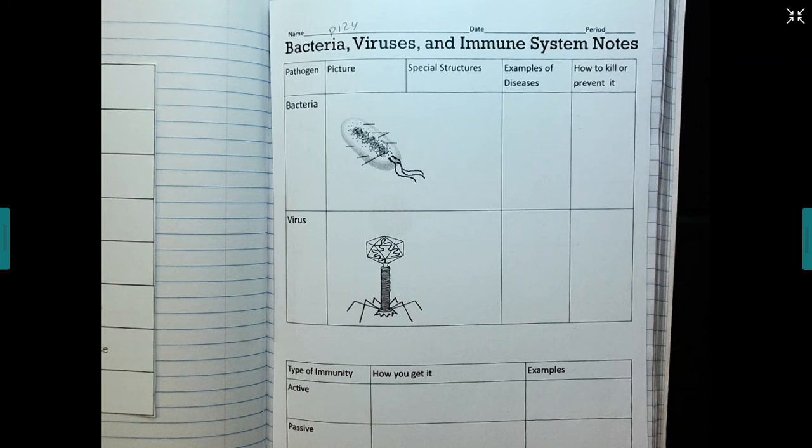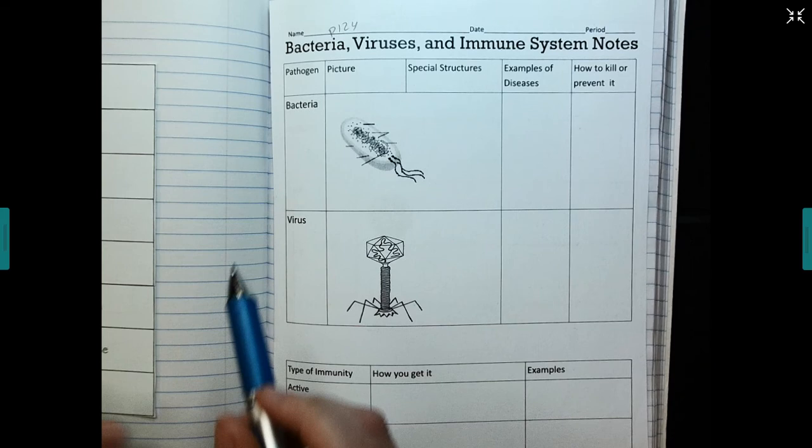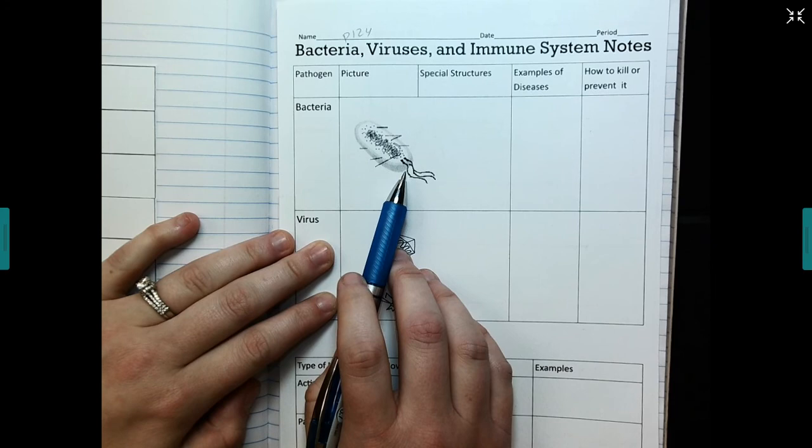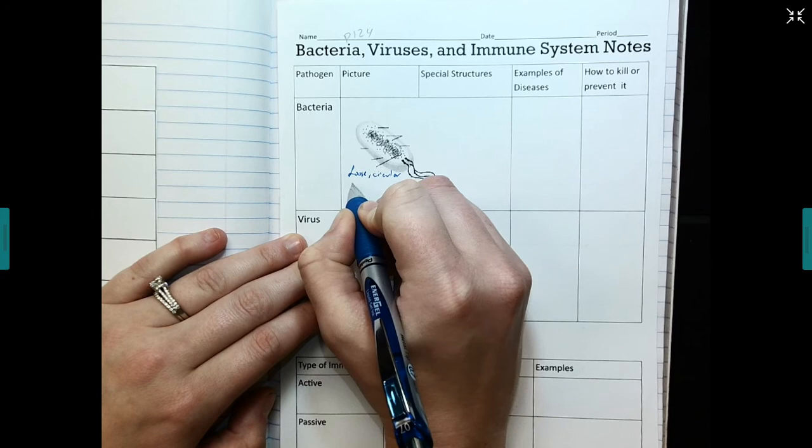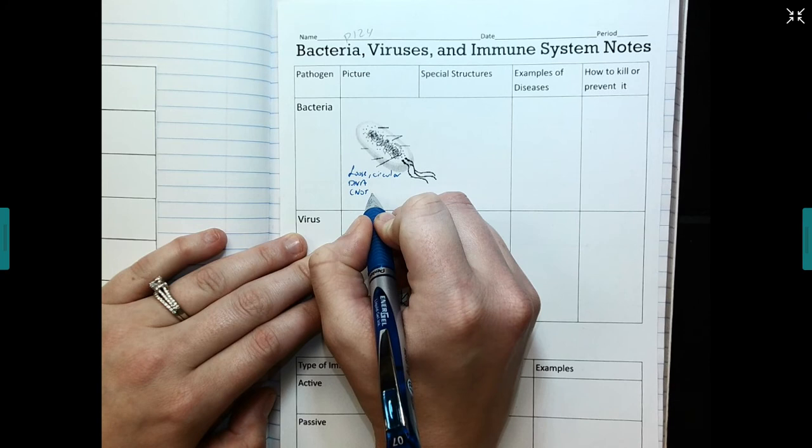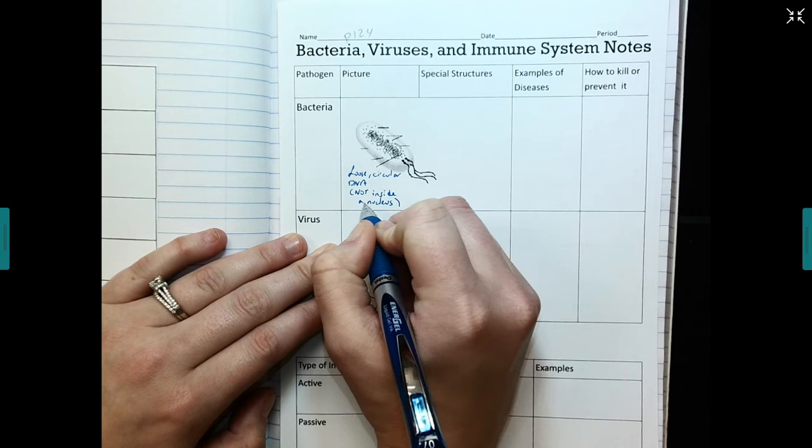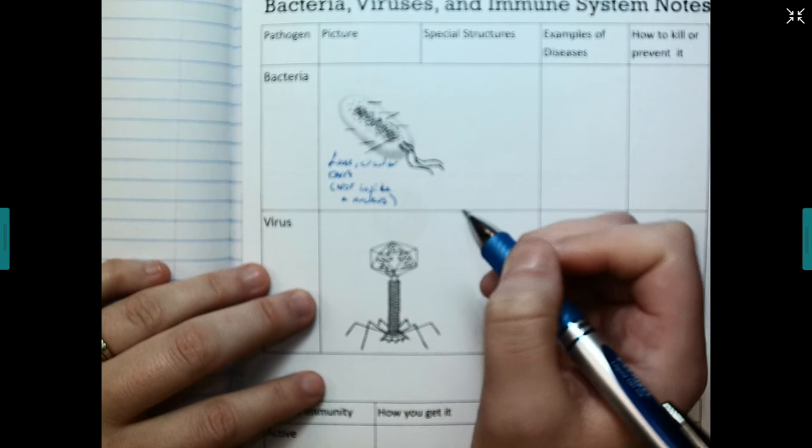So we're going to take a look at a couple different pathogens, bacteria, and viruses. So the first thing I'd like to do is label some of the special structures on the bacteria. So number one here, this is some loose, circular DNA. And it is not inside a nucleus, it is free-floating in the cytoplasm.